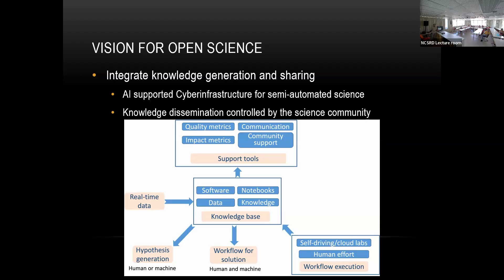You may have automated tools — in that case, why use the traditional model where someone produces data, analyzes it, publishes a paper, and then reluctantly makes it available? You could have people who specialize in data generation, make it available in real time, and have tools that help with analysis, quality metrics, impact metrics, communicating results, and developing a community around a topic.